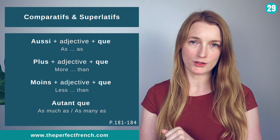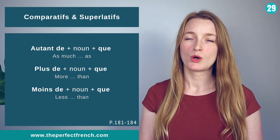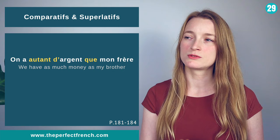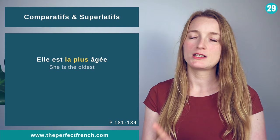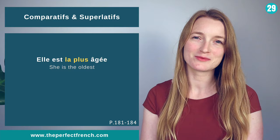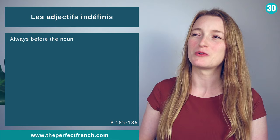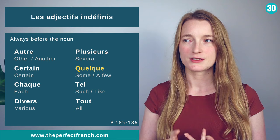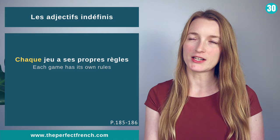Where to place adjectives: most in French are placed after the noun, but some specific ones go before. A good way to remember them is with BANGS — Beauty, Age, Number, Goodness, Size: jeune, nouveau, premier, deuxième, bon, mauvais, petit, grand. Un petit livre, un grand building. Les adjectifs indéfinis are also placed before the noun: autres, certains, chaque, divers, plusieurs, quelques, telles, tout. Chaque jeu a ses propres règles.